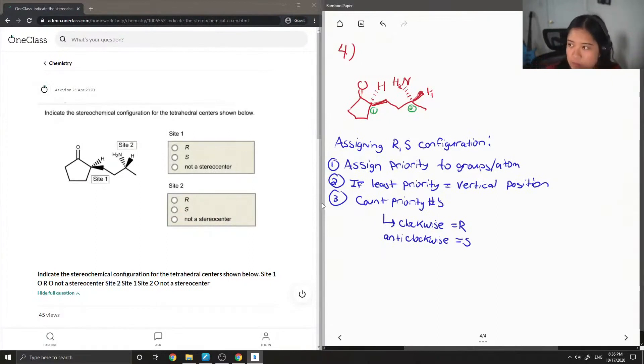Okay, so I'm going to do it for site one first. Then I'm just going to number the priorities here. So for site one, this carbonyl group has the first priority. Then this carbon is the second priority. And then this carbon is third. And then our hydrogen is the last priority.